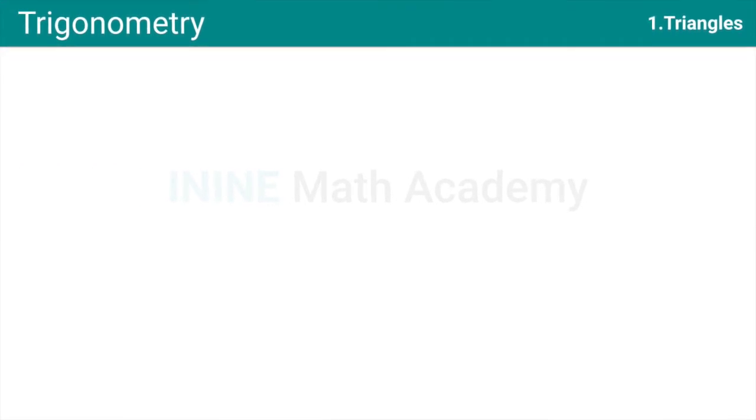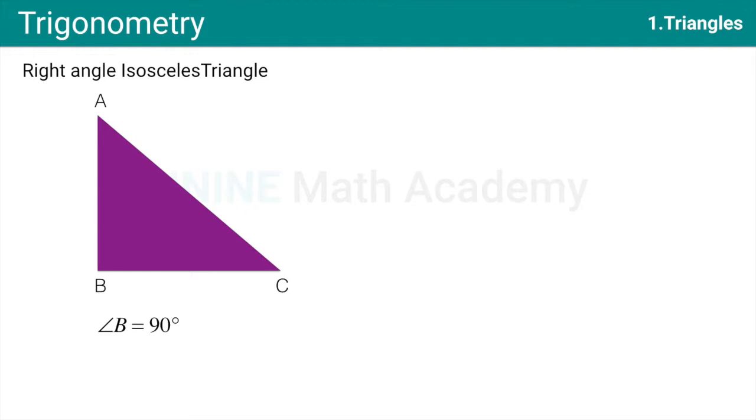Another interesting type of triangle is Right Angle Isosceles Triangle. This is a Right Angle Triangle because one of the angles is 90 degree. In our case, it is Angle B. And of course, it is Isosceles as well. What exactly that mean? Here AB is equal to BC.